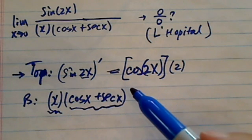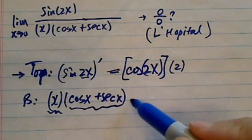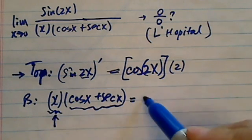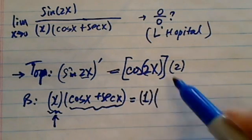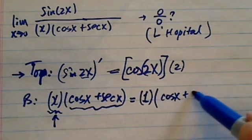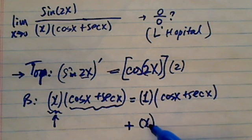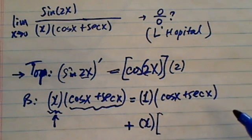The derivative for a product is not too bad if you keep track of what you're doing. We're going to take the derivative of the first term, which is really 1, and leave the second term alone. Then we're going to add, take the, leave the first term alone, and I'm going to take the derivative of the second one.